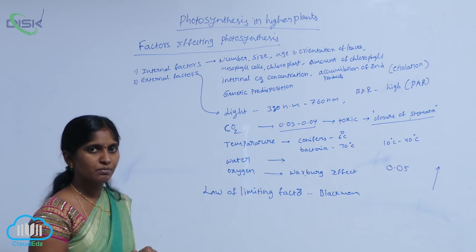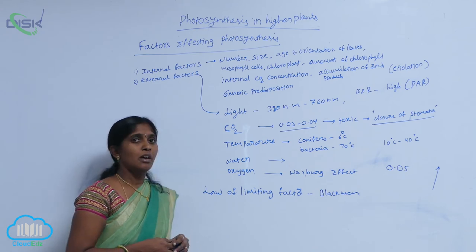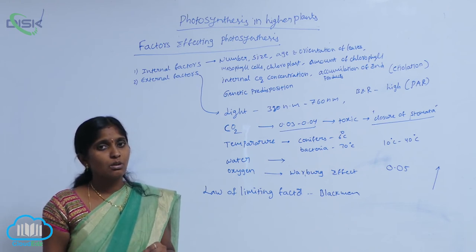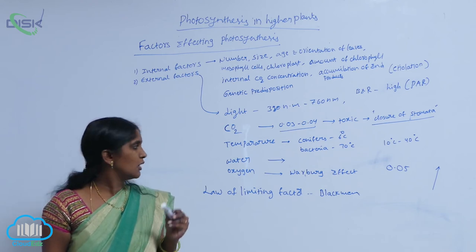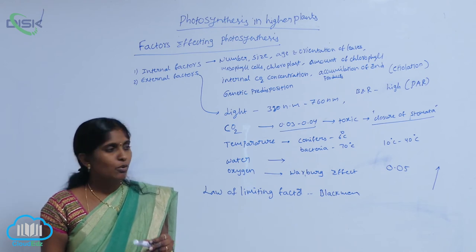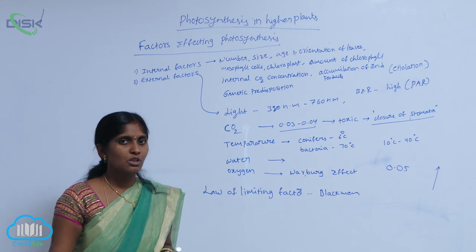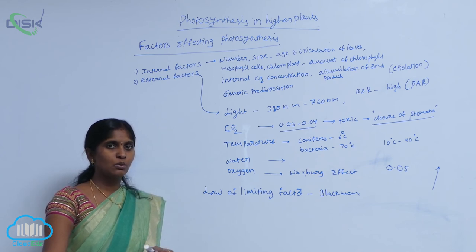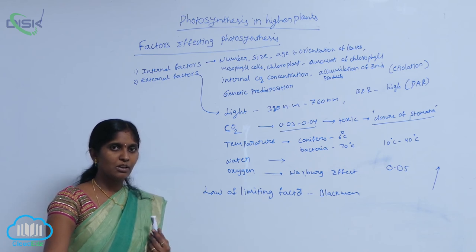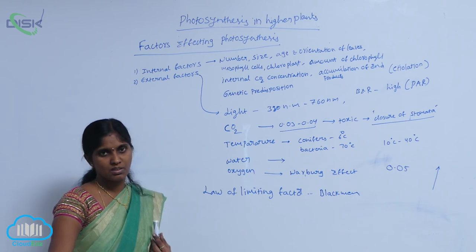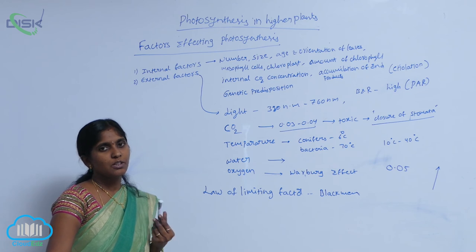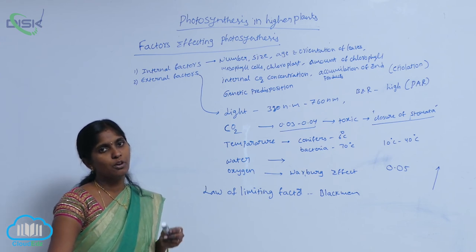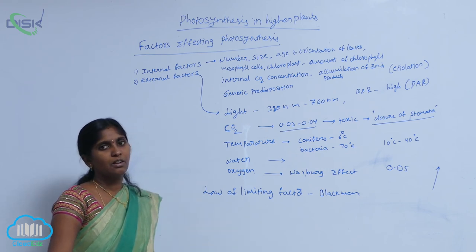When oxygen concentration is more, it inhibits the photosynthetic rate. This effect is postulated by scientist Warburg — called the Warburg effect. The Warburg effect means that at high concentration of oxygen, plants are led to photorespiration. In photorespiration, CO₂ is released, which gradually promotes the increment of carbon dioxide and promotes photosynthesis. But at high concentration of oxygen, the photosynthesis process is inhibited. These are the factors affecting photosynthesis.